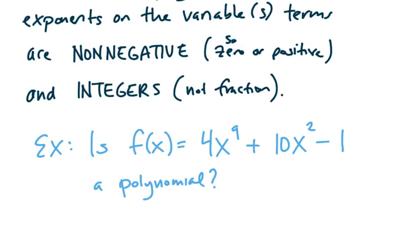So check out the different terms here. We've got, in this case, a sum and difference of some terms. And we want to ask ourselves, are the powers on the variable terms non-negative and integers. So how do we feel about 9? 9 is non-negative, correct? And 9 is an integer.